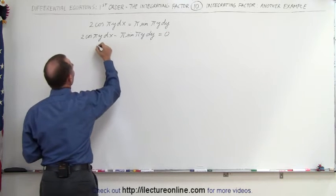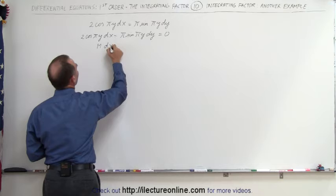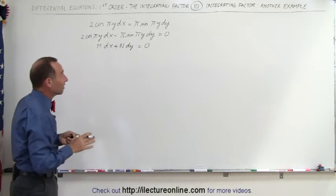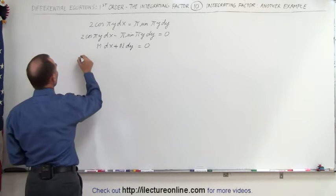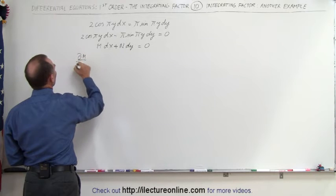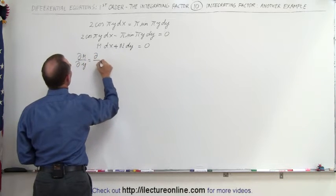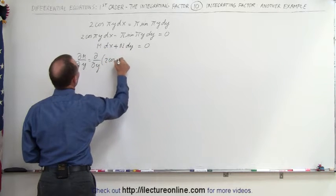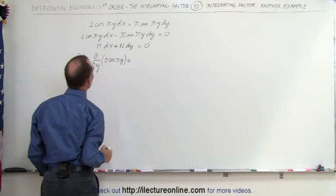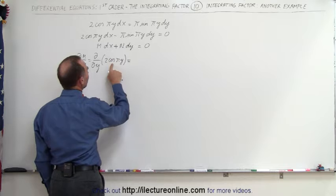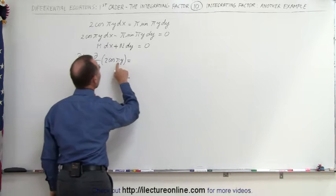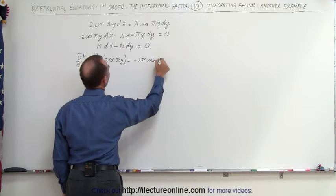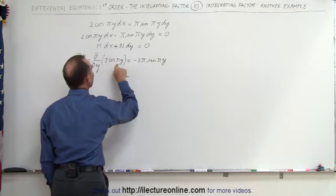This is the general format of M times dx plus N times dy equal to zero. We'll now show why this is not an exact equation. We take the partial of M with respect to y, which is the partial of 2 cos(πy) with respect to y. The derivative of cosine is negative sine times the derivative of the angle, giving us minus 2π times the sine of πy.